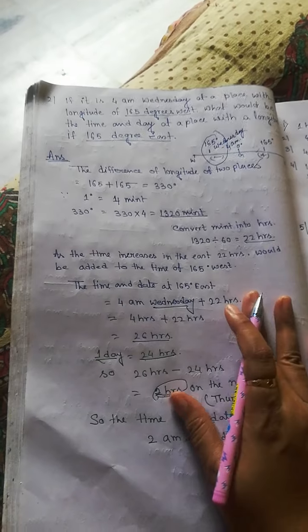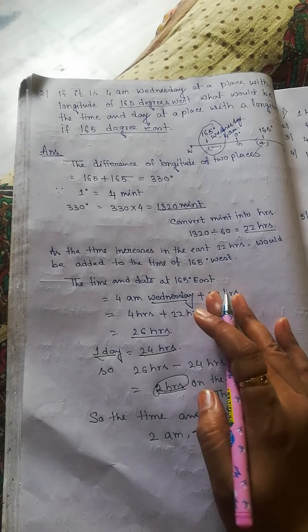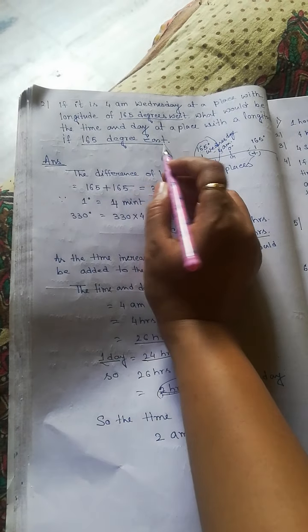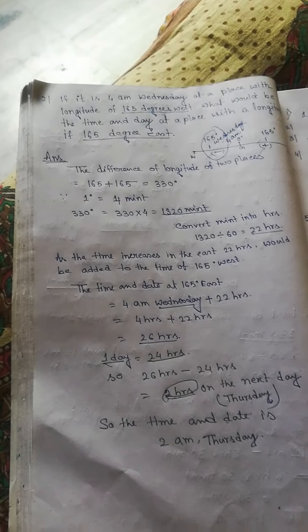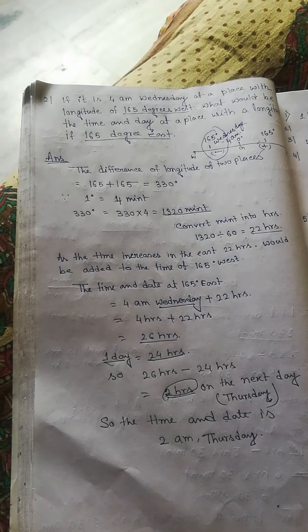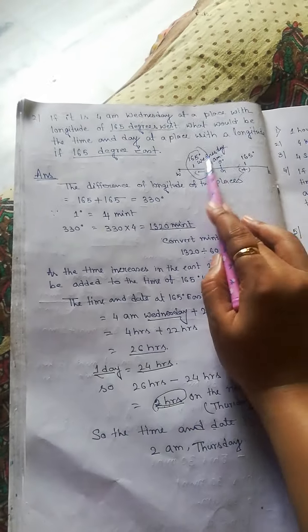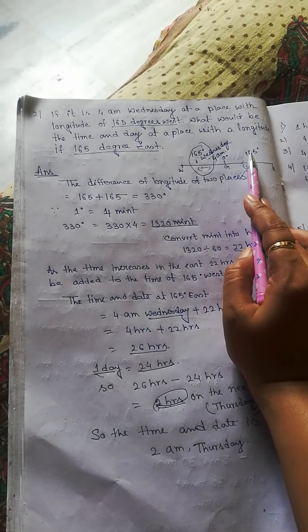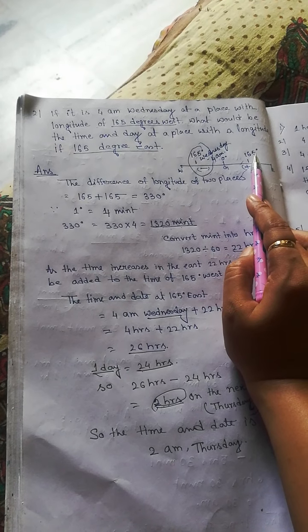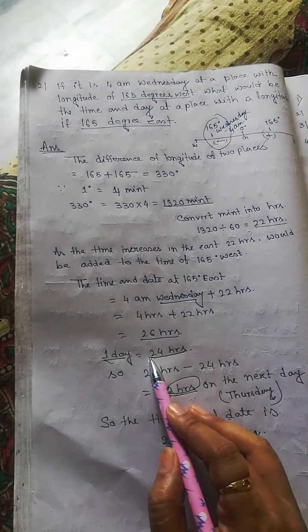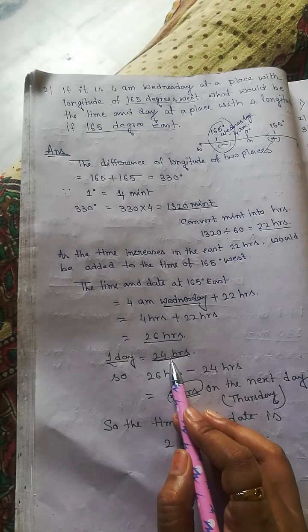So the day and the time at 165 degrees East hemisphere is 2 AM. And because we already got 24 hours, which means one day, Wednesday's next day is Thursday. So the time is 2 AM Thursday at 165 degrees East hemisphere.